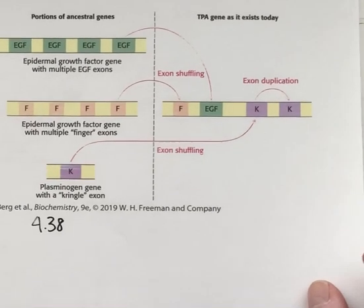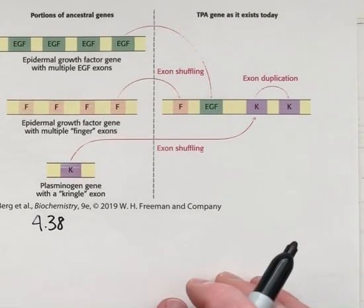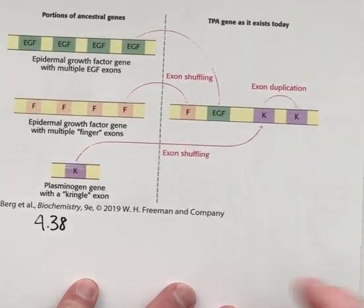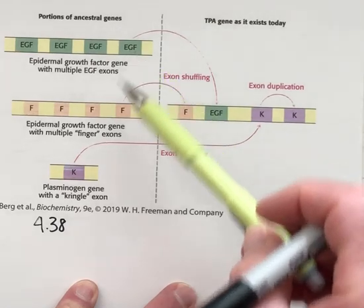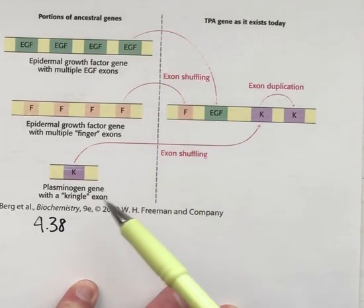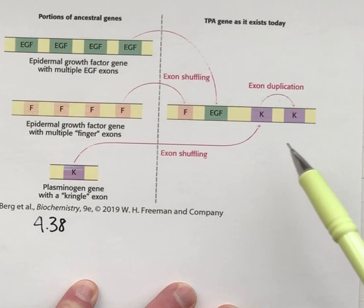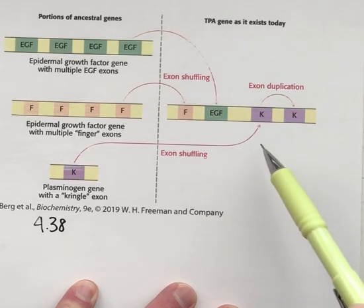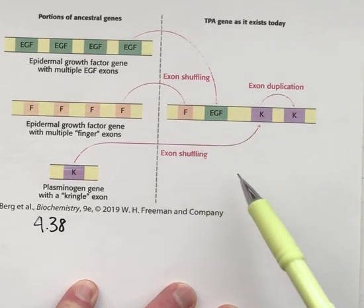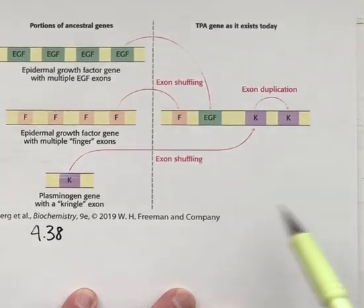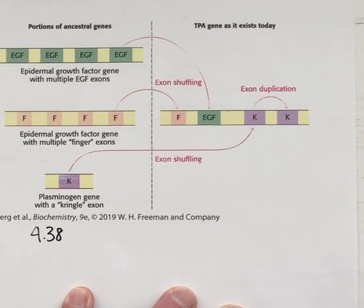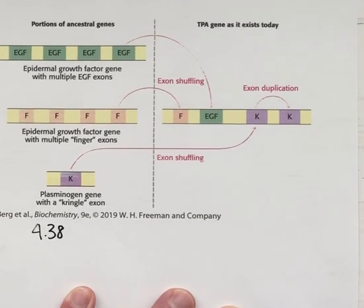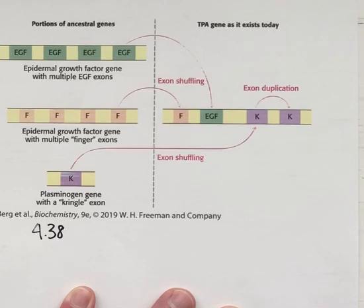So why is intron removal important or why should we care about introns and exons? Well one reason has to do with evolution, and this picture 4.38 shows how exons can get duplicated and moved to form new genes, and the likelihood that the exons will match up exactly in reading frame is very low if you try to put the exons together at the DNA level.